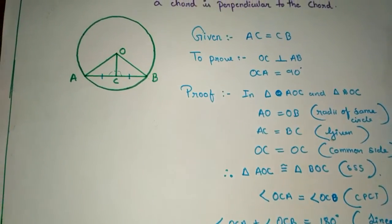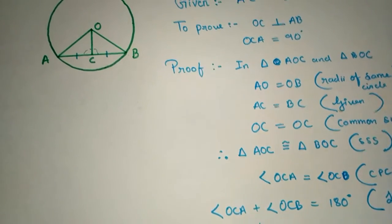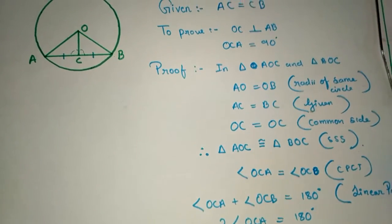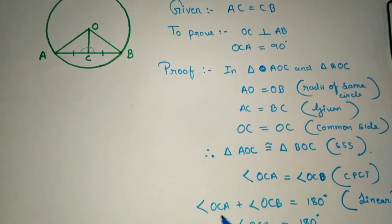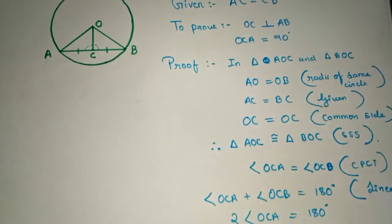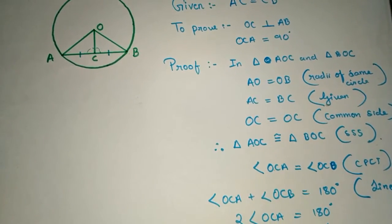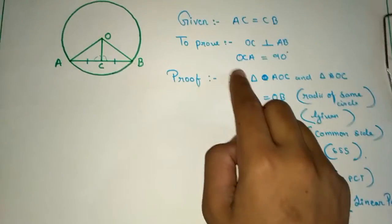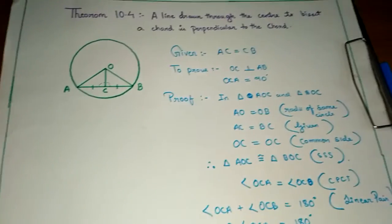Since OCA equals OCB, and OCA plus OCB equals 180 degrees, we get OCA plus OCA equals 180 degrees, which gives OCA equals 90 degrees. We have proved successfully that OCA is equal to 90 degrees.